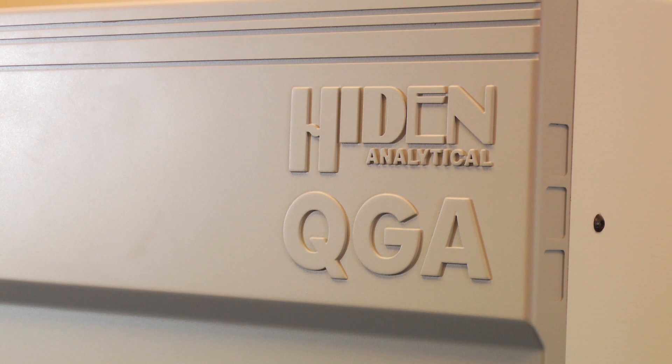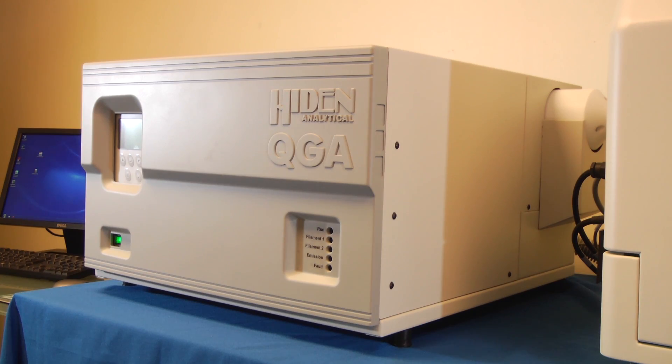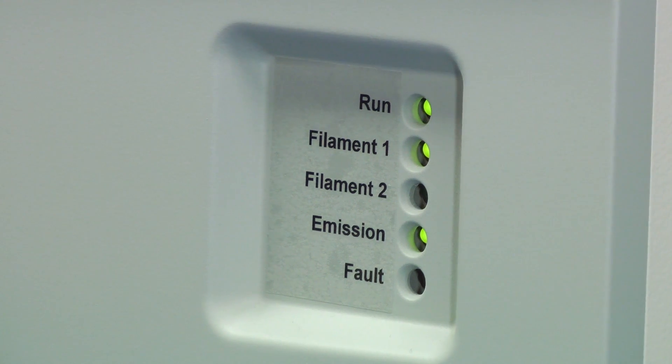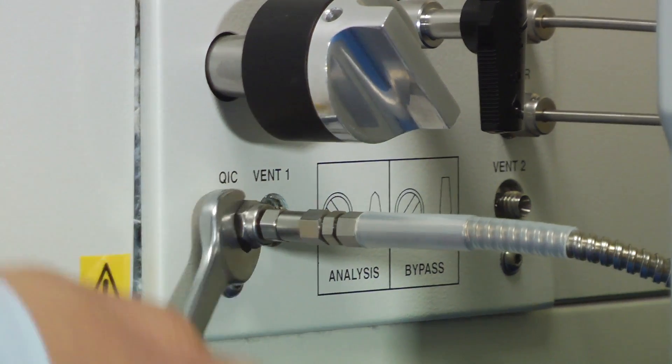For monitoring reaction products from the CATLAB, the system uses the Hiden QGA gas analyzer. Additionally, the QGA can be disconnected from the CATLAB and used as a stand-alone gas analysis system.